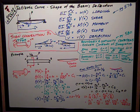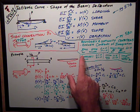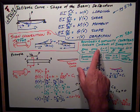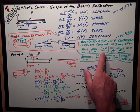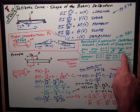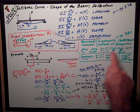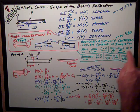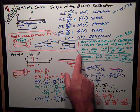And the common ones that we're going to use are at a pin or a roller support at the end of a beam, the deflection is zero, the moment is zero. At a pin or a roller in the middle of the beam, I can't say anything about my moment, but I do know that my deflection will be equal to zero.